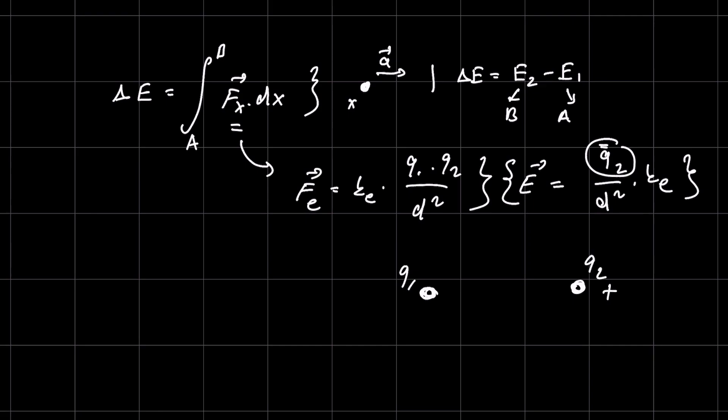Electric field lines always point from positive charges toward negative charges. For positive charges, the field is directed outward. For negative charges, it is directed inward.